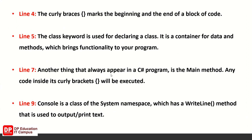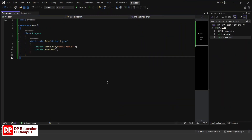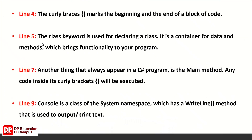Another thing that always appears in a C-Sharp program is the main method. Any code including its curly brackets will be executed — this is the main method. The main method contains a WriteLine method that is used to output and print text.